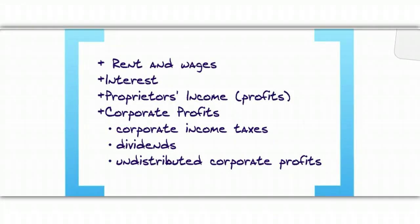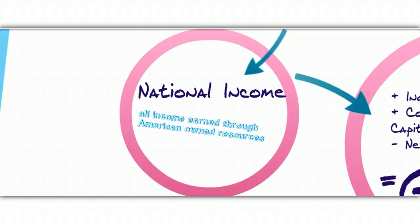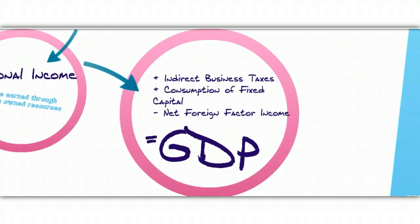It's a little more complicated. We look at rent and wages — payment for land and labor. We look at interest — payment for capital. Then we look at all the profits, the payments for entrepreneurship, which has several parts: all the proprietor's income, all the corporate profits such as corporate income taxes, dividends, and undistributed corporate profits. All that comes to a number called the national income — all the income earned through American-owned resources. To that, if we add indirect business taxes and the consumption of fixed capital (depreciation), and subtract out the net foreign factor income, that gives us our GDP. Since there are a lot more steps this way, we're just going to memorize C plus IG plus G plus XN.